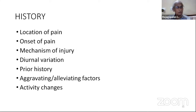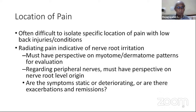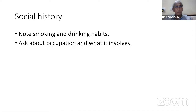Important aspects of history include: location of pain — spine patients cannot specifically locate it unless you ask; radiation of pain — you need to know myotomes and dermatomes; whether the symptom is static or progressive; and whether there are exacerbations and remissions, which would suggest a chronic inflammatory disease. Onset of pain, mechanism of injury, diurnal variation, prior history, and aggravating factors are all important.